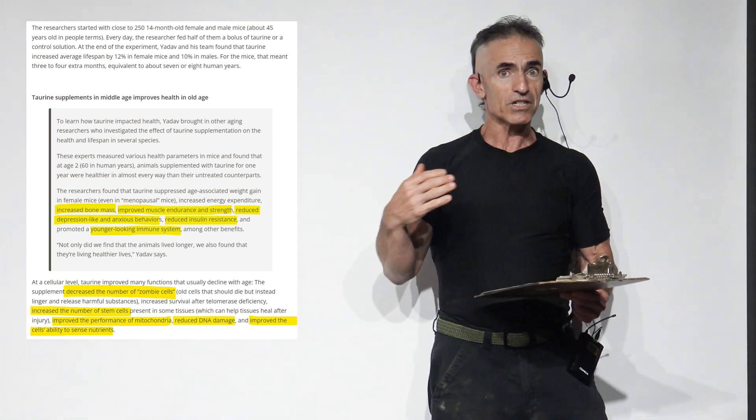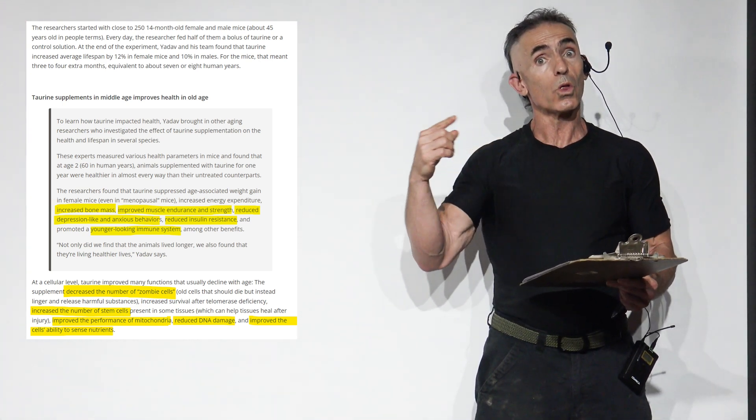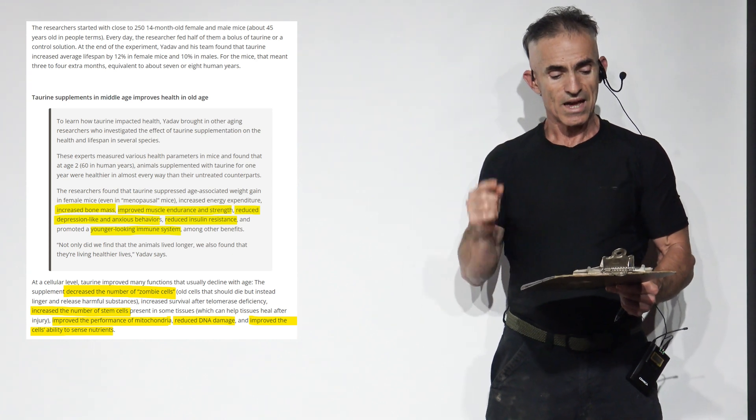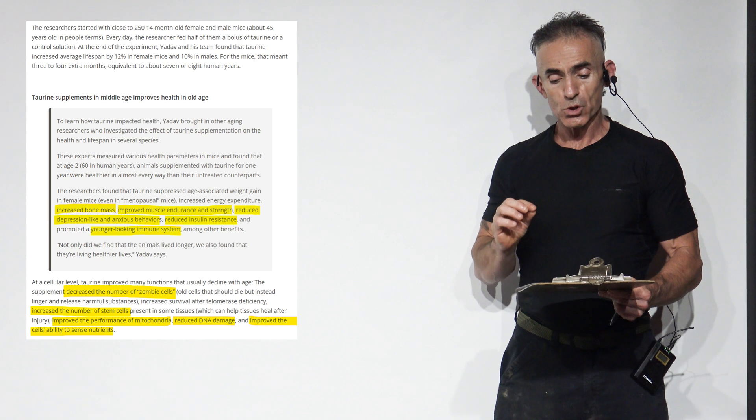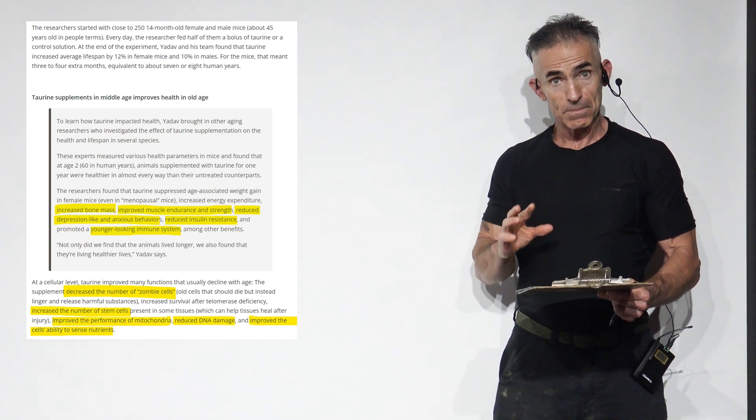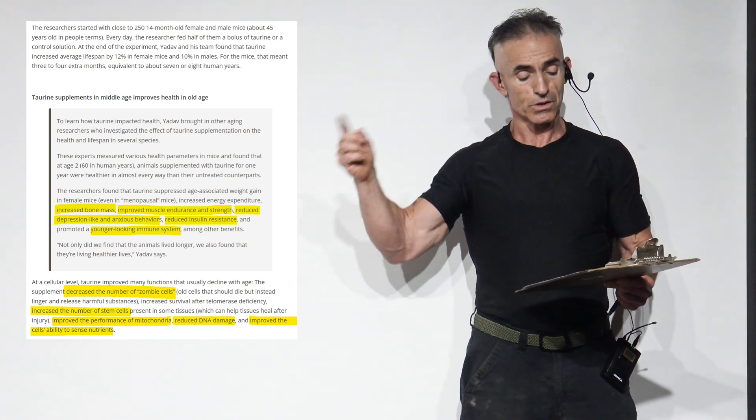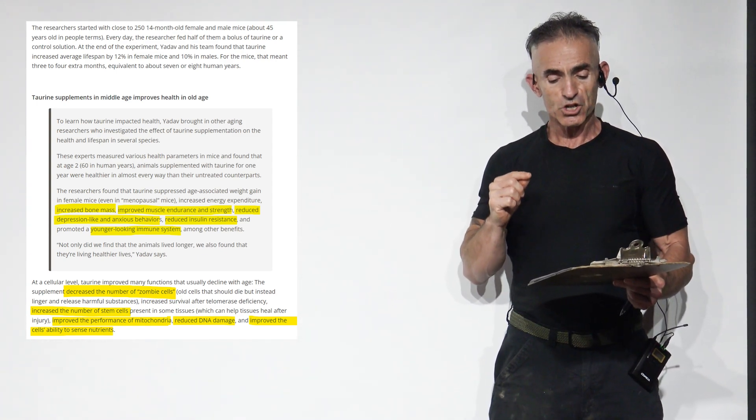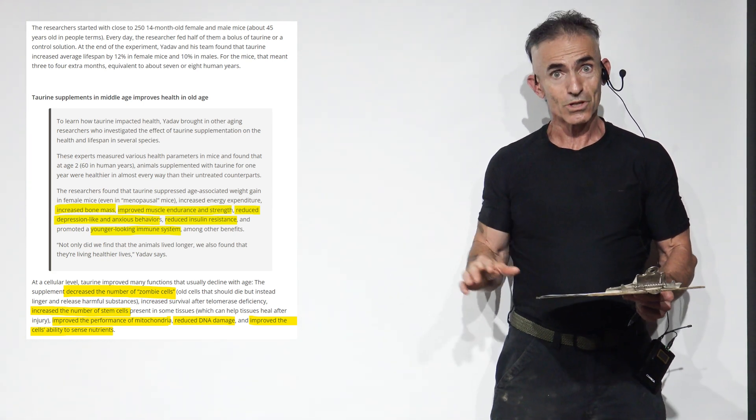One thing about extending lifespan, another about extending healthy years to go along with that lifespan increase. At a cellular level, taurine improved many functions that usually declined with age. The supplement decreased the number of zombie cells - old cells that should die but instead linger and release harmful substances.